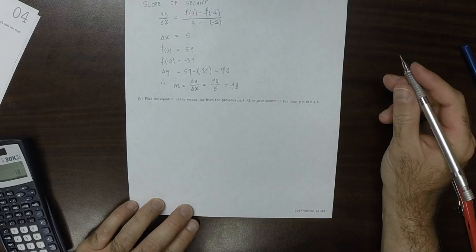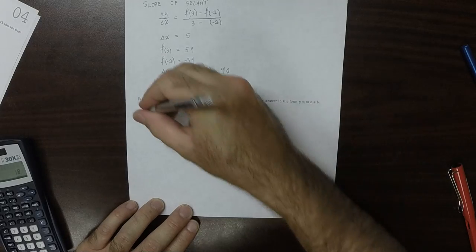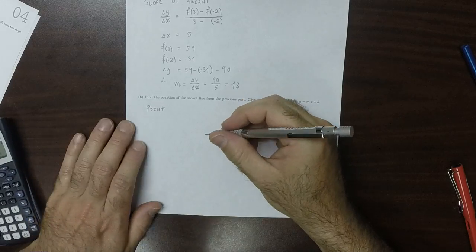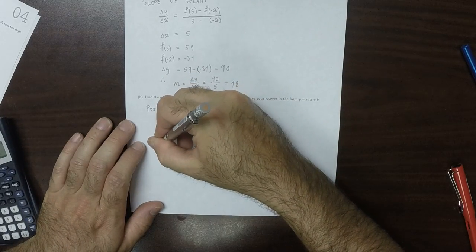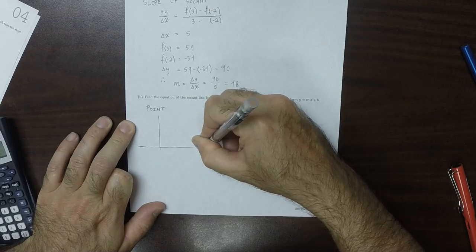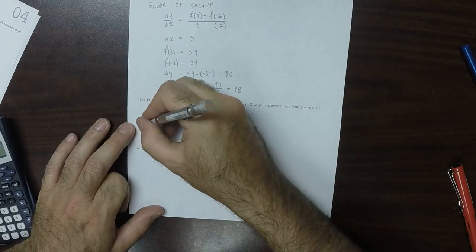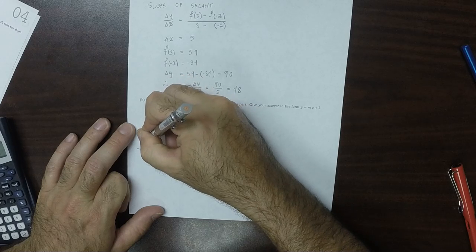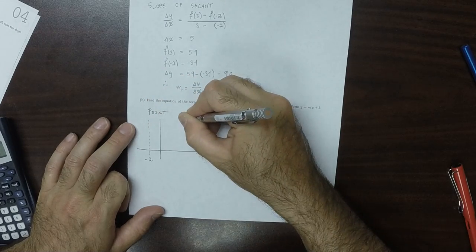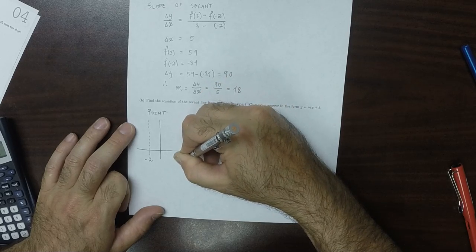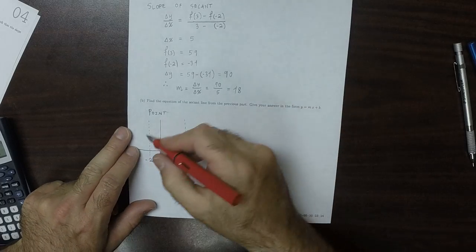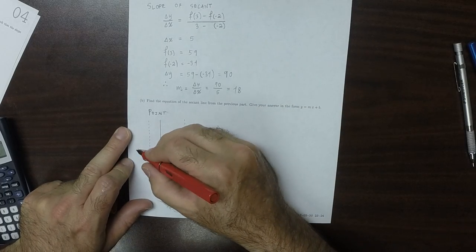Okay, find the equation of the secant line. So for a point, conceptually the way this works is that we already have two points that are on the function, because the function somehow looks like this more or less.